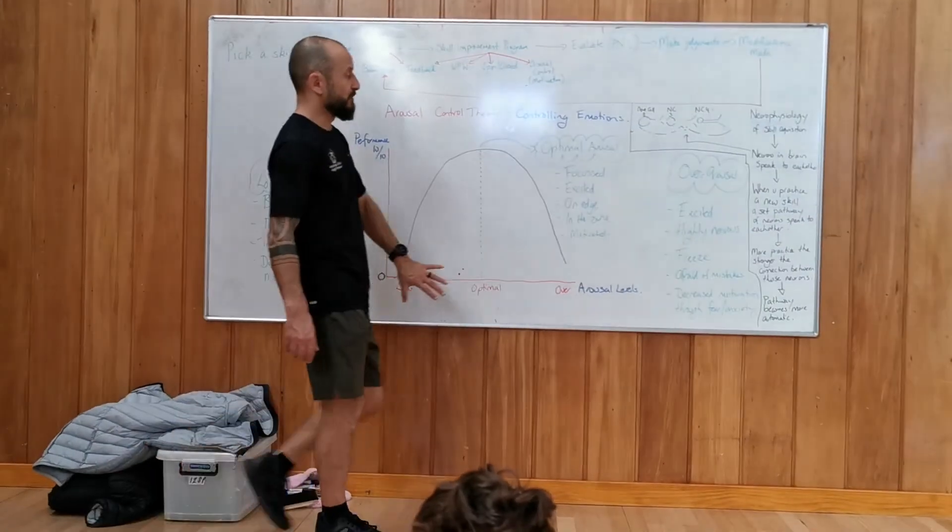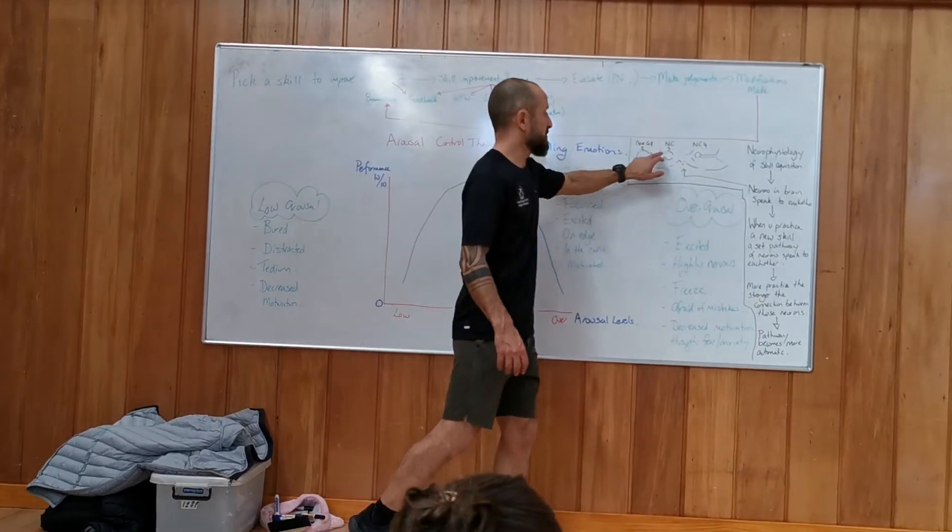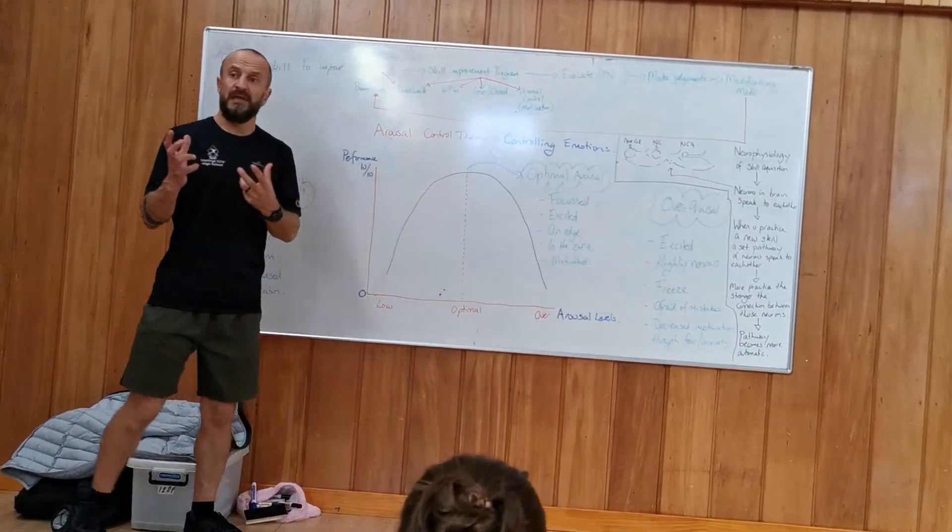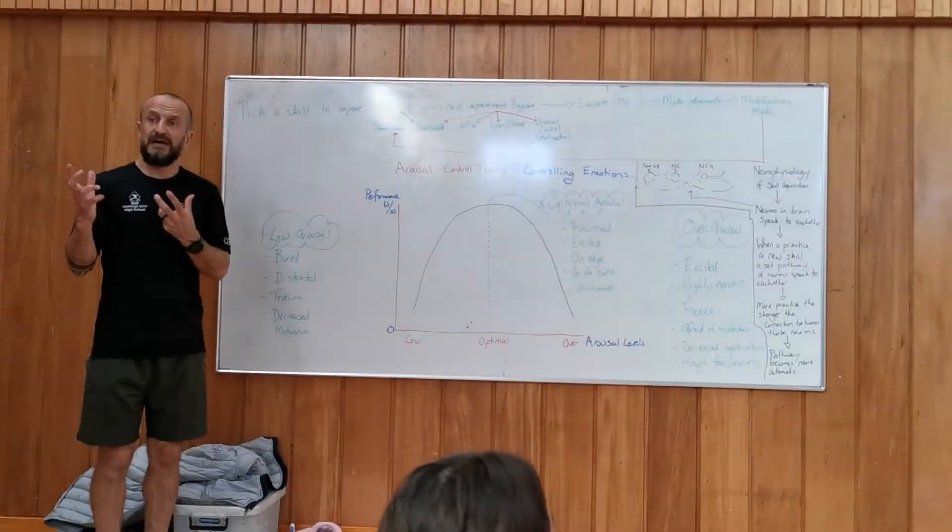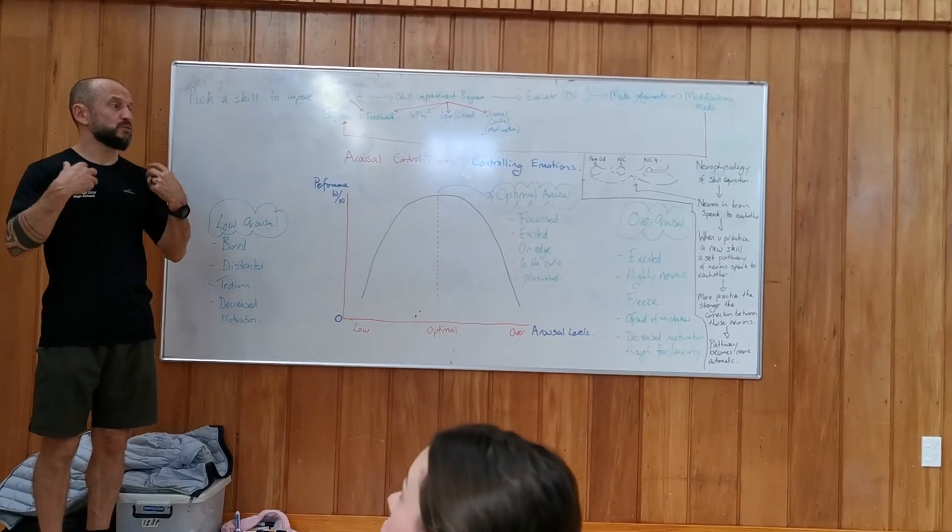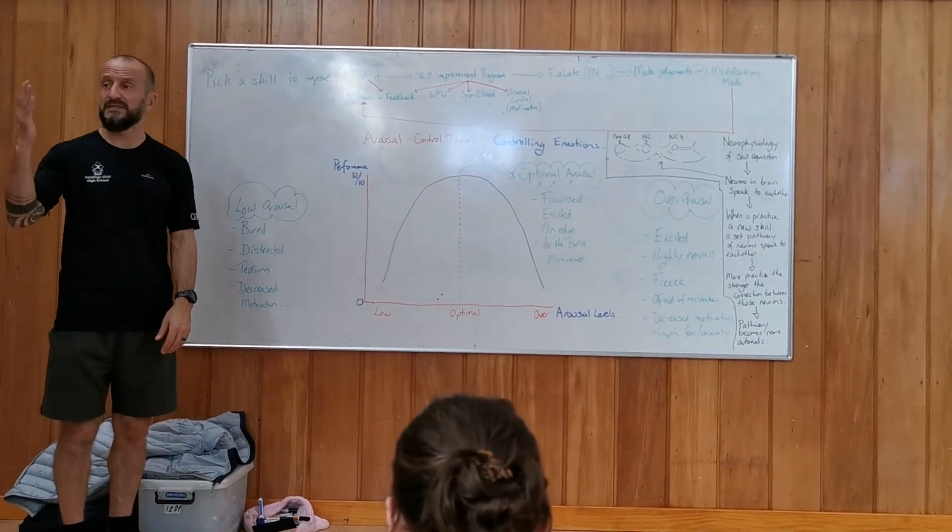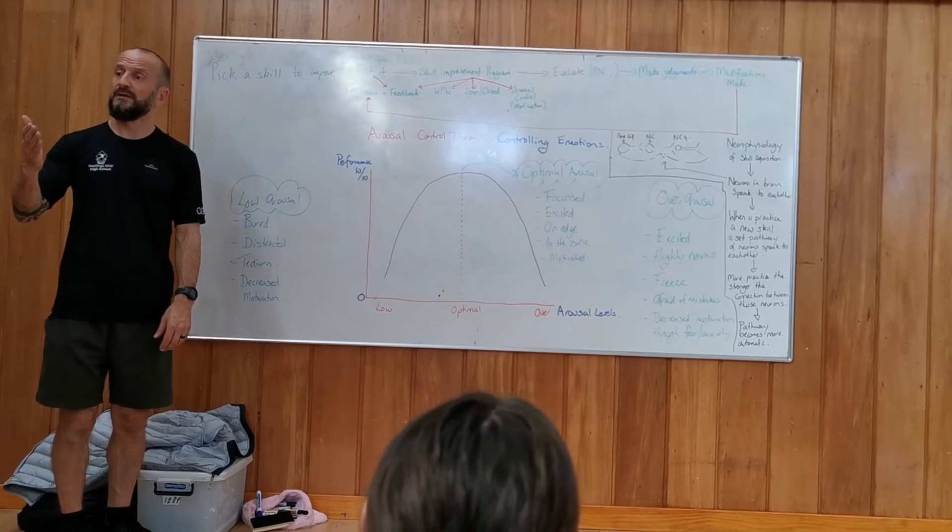So, if you're overexcited here, what happens is the communication between these cells here is a little bit different. And it actually becomes a little bit faulty because you get adrenaline. You get all sorts of other chemicals going on in the brain affecting those connections so the pathway doesn't get as strong.